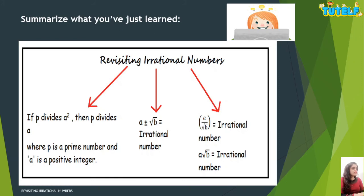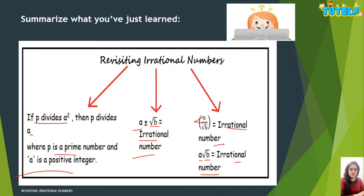Let's quickly summarize what we have learned: if P divides A squared, then P divides A also, where P is a prime number and A is a positive integer. The sum or difference of one rational and one irrational number gives an irrational number. The product or division of one rational and one irrational number also gives an irrational number. I hope this topic is clear. If you have any doubts, please write your query in the comment box. Visit our website for study material, and don't forget to subscribe and share our channel for more science and maths videos. Stay safe, bye.